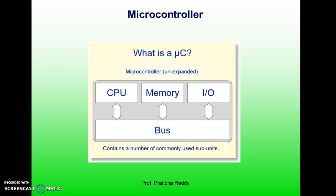In many applications, for example a TV remote control, there is no need for the computing power of a 486 or even an 8086 microprocessor. In many applications, the space it takes, the power it consumes and the price per unit are much more critical considerations than computing power. These applications most often require some input-output operations to read signals and turn on and off certain bits. It is interesting to note that some microcontroller manufacturers have gone as far as integrating an analog-to-digital converter and other peripherals into the microcontroller.